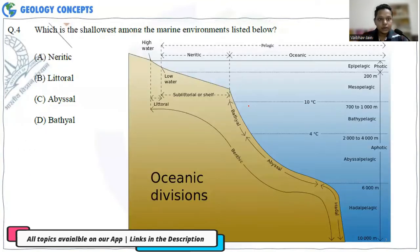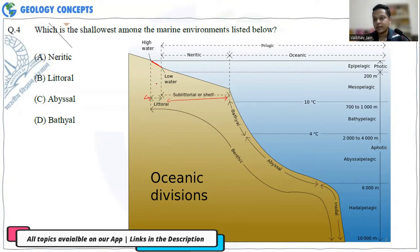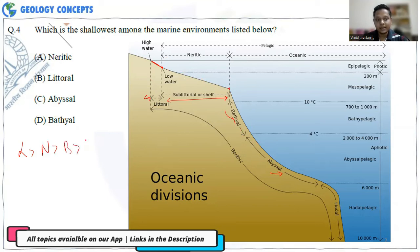The next question asks which marine environment is the shallowest. Referring to the oceanic division, the zones in order of increasing depth are: littoral (closest to the surface), neritic, bathyal, and finally abyssal. So the shallowest zone is the littoral zone — option B is correct.